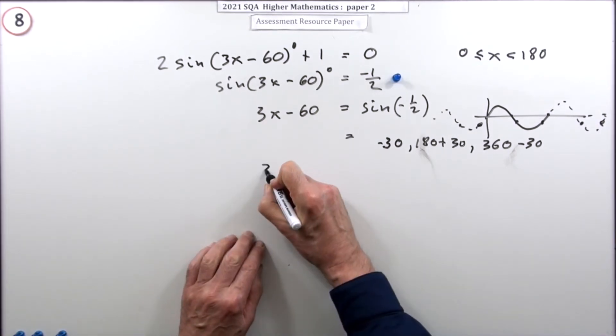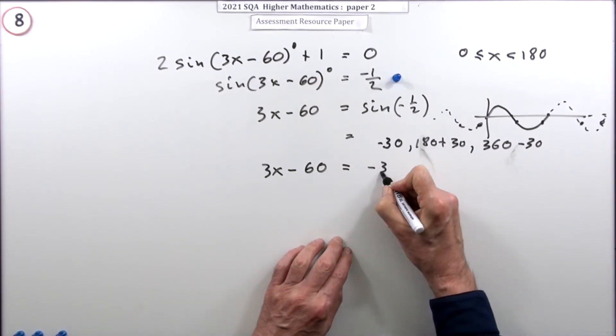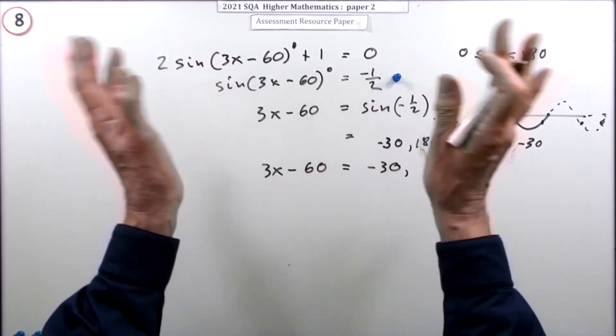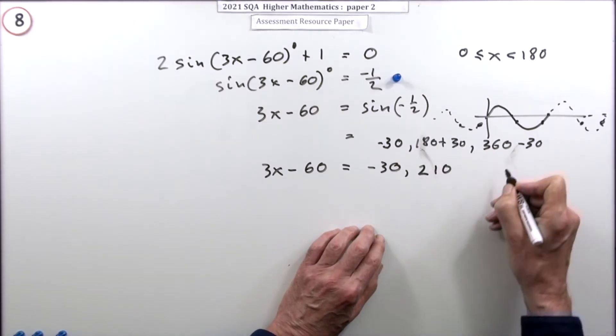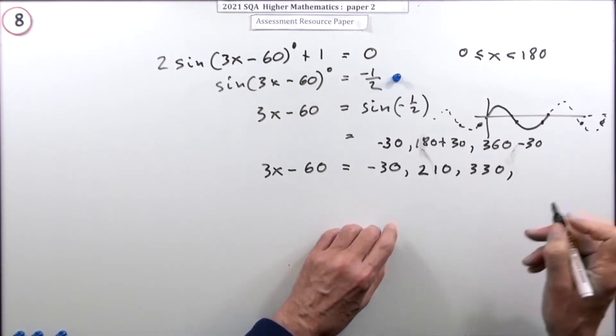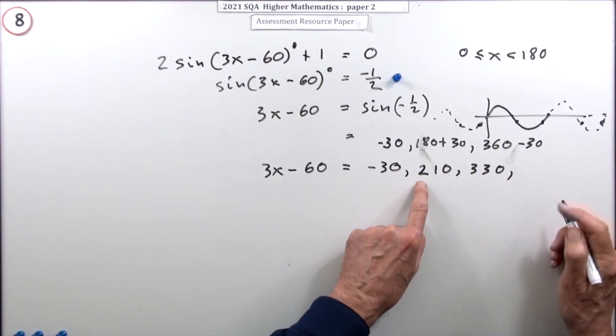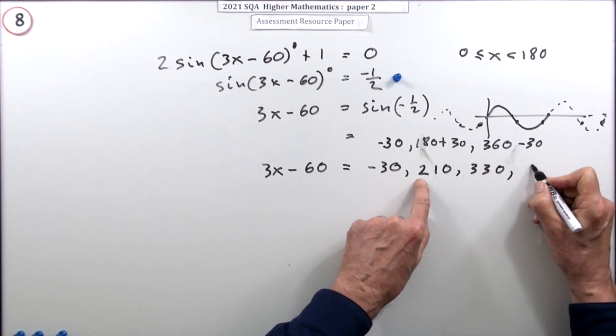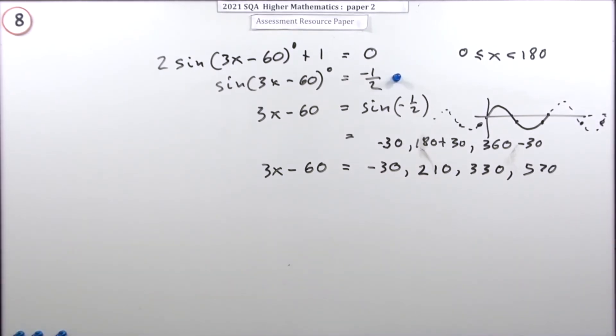So what I've got for this line is 3x minus 60 equals: it could be minus 30, it could be 210, or it could be 330, or it could be 360 more than them. The next one, because 360 more than that would be 570. Those are the possibilities, just extending a little bit.